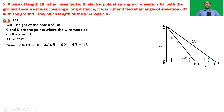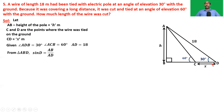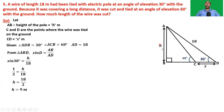We need to find AD minus AC — how much wire was cut. We know AD; we need to find AC. First we find AB. From triangle ABD: sin D = AB/AD, so sin 30 = h/18, giving h = 18/2 = 9 meters.